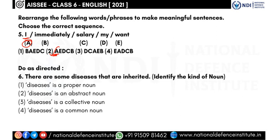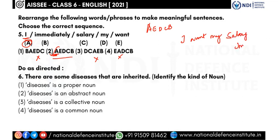Option D-C-A-E-B gives 'my salary I want immediately' — cancelling this one. Option E-A-D-C-B gives 'want I my salary immediately' — no. So the right answer is A-E-D-C-B: 'I want my salary immediately.'